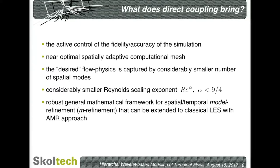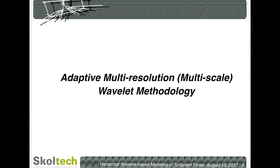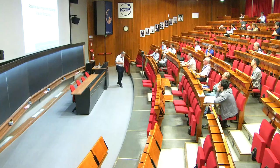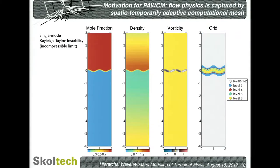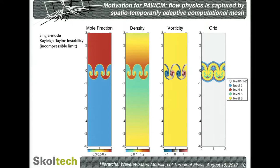To develop this type of approach, we need active control of fidelity, an adaptive spatial mesh, and the ability to capture desired flow physics. The method needs to produce better scaling than classical methods. Most importantly, you have to have adaptive mesh refinement methods to do that. Let me start with the adaptive methods we developed to give you perspective on the capabilities that allow us to pursue this research.